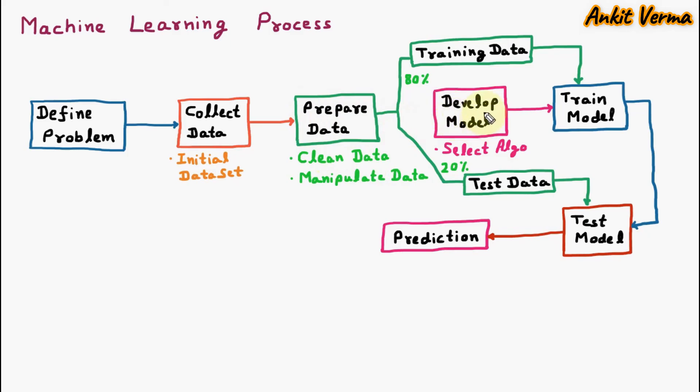Afterward, model is developed using some algorithm. Out of the prepared data, 80% data is taken as the training data and model is trained. The remaining 20% of the data is test data, and by using this data, model is tested. After all the improvements, the model starts prediction.